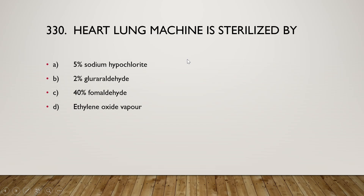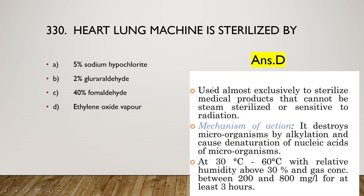The next question: the heart-lung machine is sterilized by 5% sodium hypochlorite, 2% glutaraldehyde, 4% formaldehyde, or ethylene oxide vapor? The right answer is option D — ethylene oxide vapor is used as a sterilizer for the heart-lung machine. Ethylene oxide vapor is used extensively to sterilize medical products that cannot be steam sterilized or are sensitive to radiation. Its mechanism of action is alkylation, causing denaturation of nucleic acids of microorganisms.